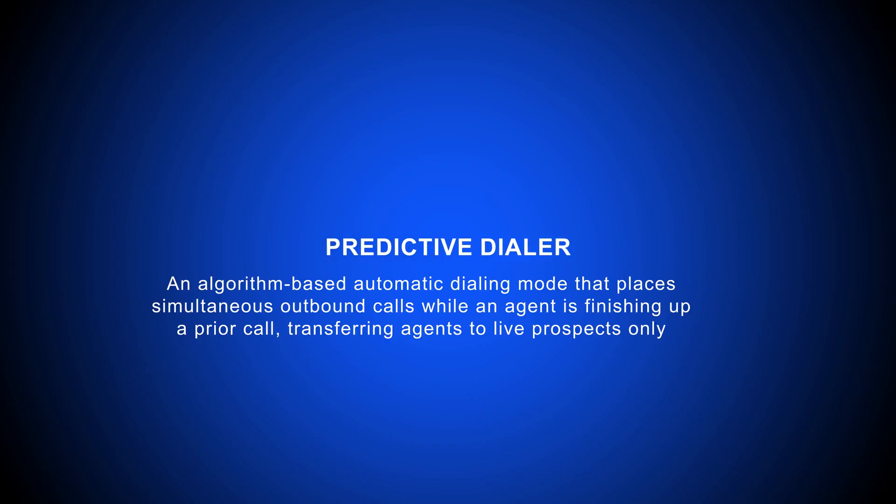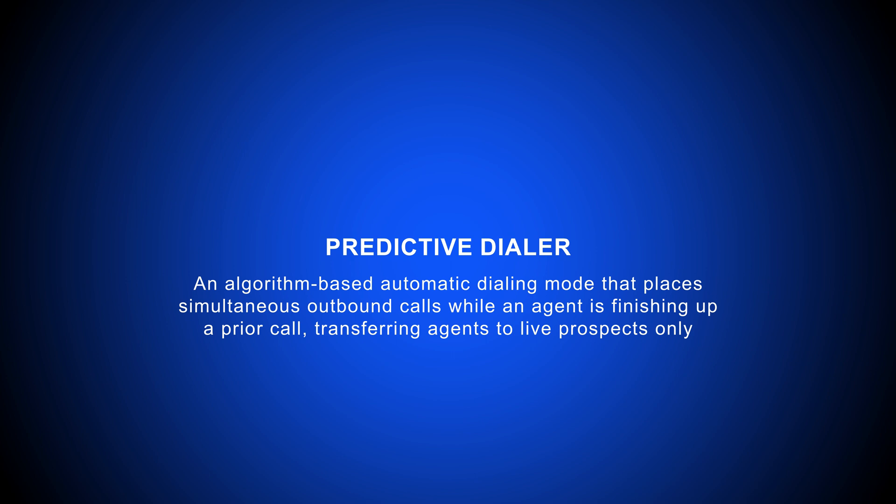A predictive dialer is an automatic dialing system using a pacing algorithm to place simultaneous outbound calls while an agent is finishing up a prior call, and then transferring the agent strictly to live leads.